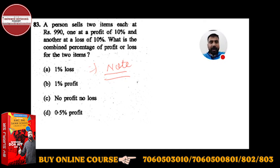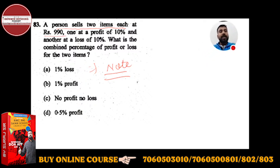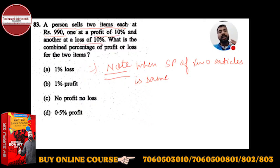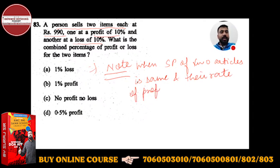Directly, from there we had drawn the conclusion. Here, a person sells two items each at Rs. 990, so the selling price of both items is the same. When the SP of two articles is same, and one is at profit 10% and another at loss 10%, their rate of profit and loss is also the same — both at 10%. And their rate of profit and loss is also same.